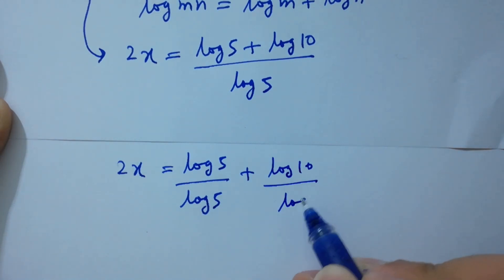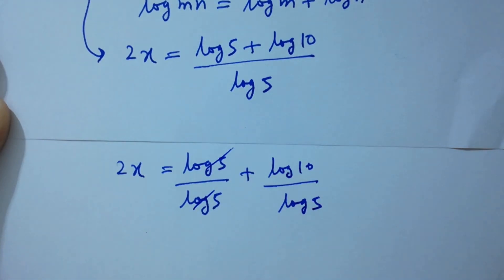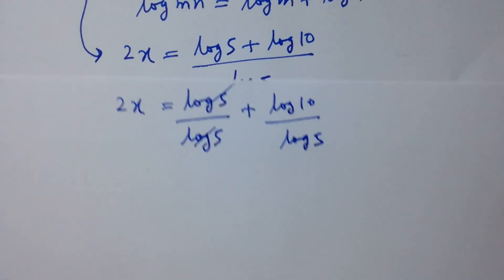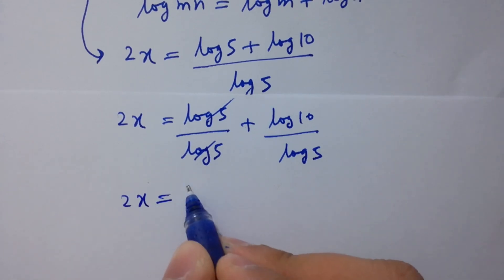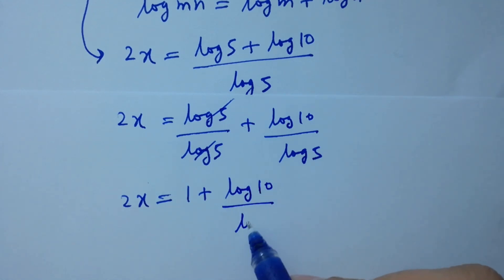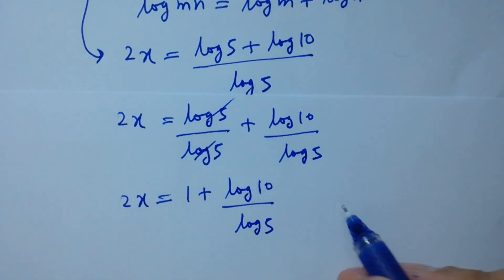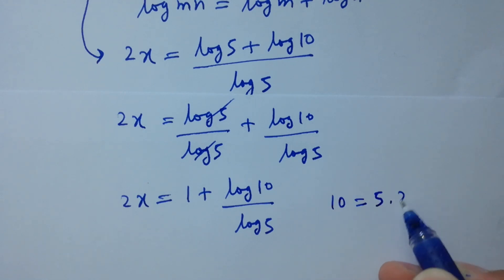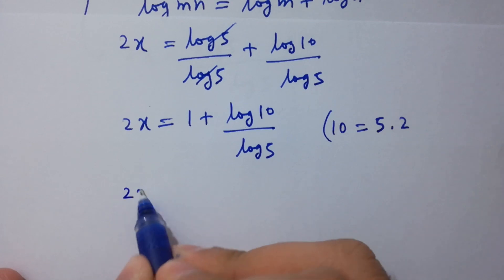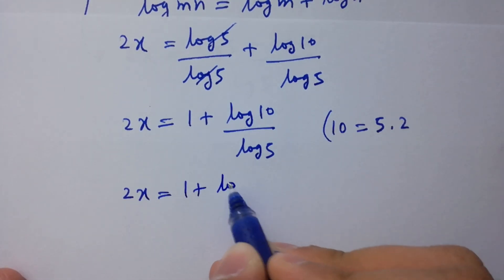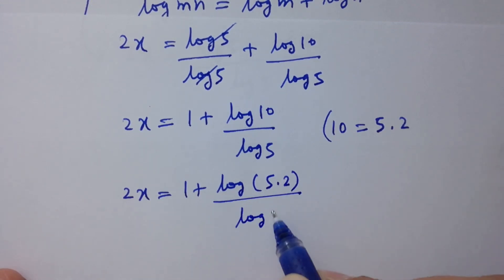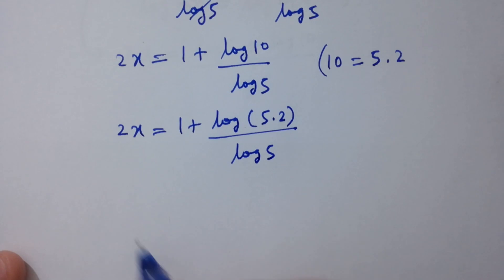Splitting the fraction: 2x equals log 5 over log 5 plus log 10 over log 5. Log 5 over log 5 cancels to 1, so 2x equals 1 plus log 10 over log 5. Since 10 equals 5 times 2, we have 2x equal to 1 plus log(5 times 2) over log 5.